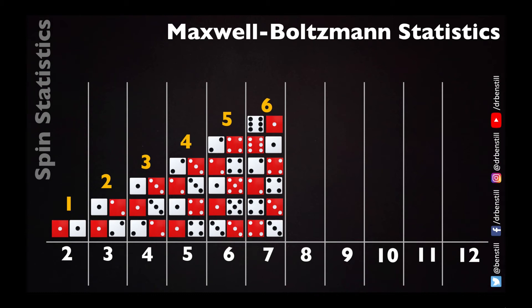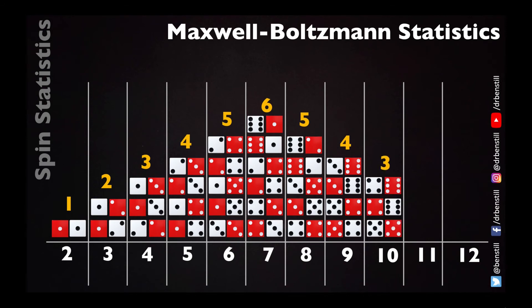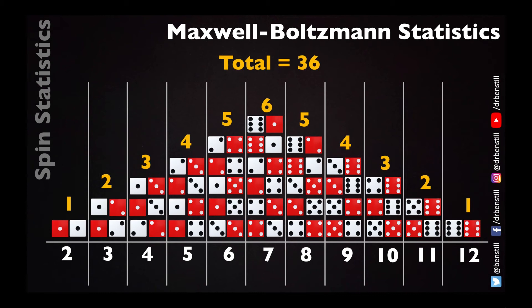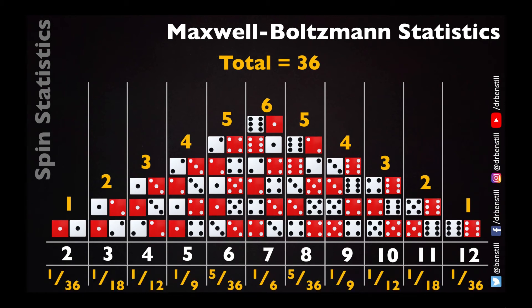After seven the count decreases: five ways of getting eight, four ways for nine, three for ten, two for eleven, and one for twelve. In total there are eleven possible states from two through to twelve, and thirty-six possible ways the two dice can be in one of those states. We can work out the probability of each state by dividing the number of ways to achieve it by thirty-six. So the probability of a two or twelve is one in thirty-six; a three or eleven is one in eighteen, and so on.